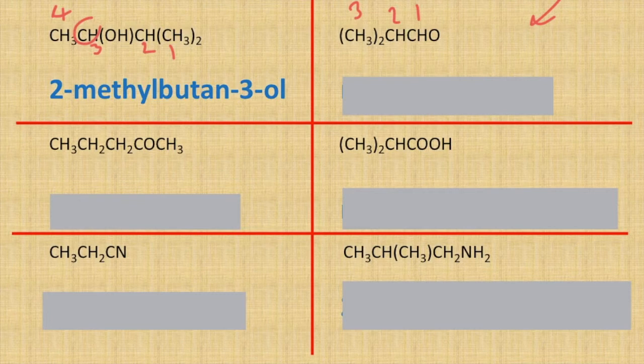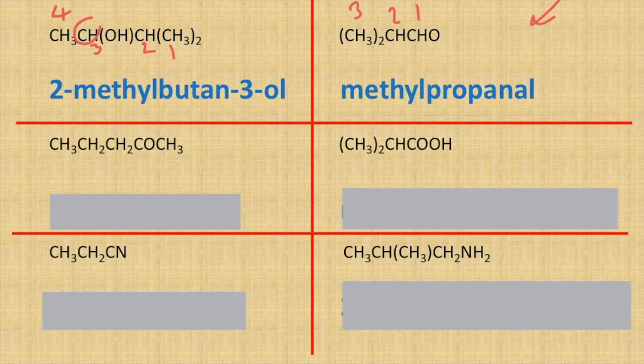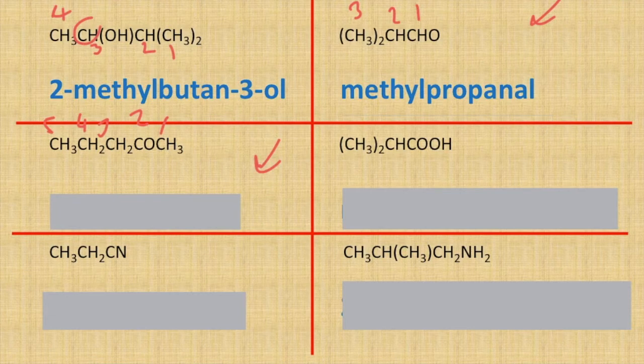Therefore this one is going to be methylpropanal — we don't need the two because if it's methylpropanal it's got to be on the second carbon. Then it looks like we are back to a ketone here — one, two, three, four, five carbons — so it's going to be pentan-2-one.